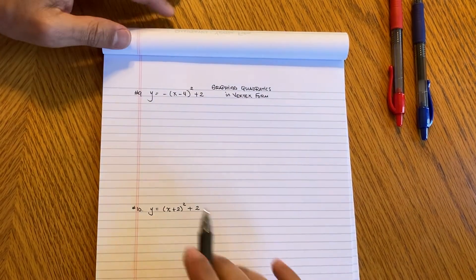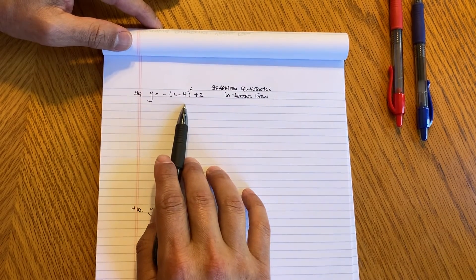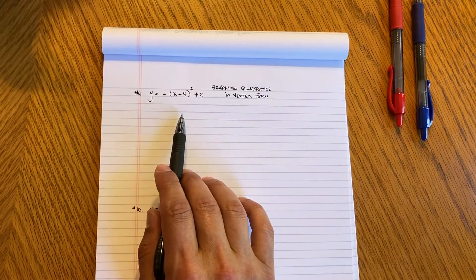Hey guys, today I want to go ahead and talk about how to graph in vertex form. So this here is called vertex form, this is a quadratic so we know it's going to look like a U.